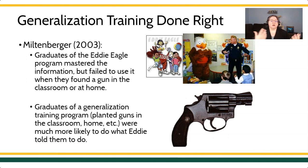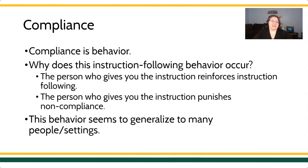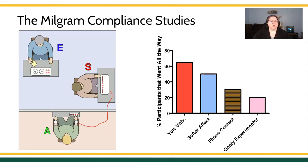This builds on a larger body of literature about our potential to comply with instruction. Compliance is a kind of instruction-following or rule-following behavior. Why do people follow instructions? It could be that the person giving the instruction is likely to reinforce the behavior, or that they will punish non-compliance — either positive reinforcement or negative reinforcement, escaping an unpleasant consequence. Compliance or rule-following seems to generalize to lots of different people and settings, and the Milgram experiment is a perfect example of rule-governed behavior that generalizes to different places.